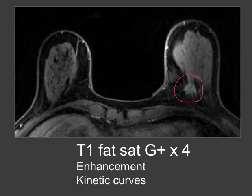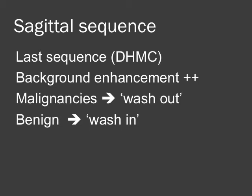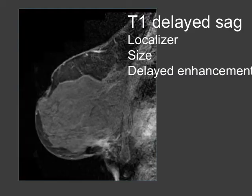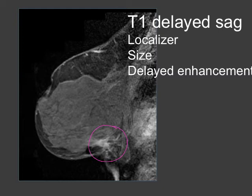Just notice here in this patient — you can see an enhancing spiculated mass in the deep posterior tissue of the left breast. The last sequence we obtain is the sagittal sequence. By this time there is often significant background enhancement, and malignancies in which the contrast tends to wash out on later studies may not be very apparent. Conversely, benign processes with progressive enhancement may become more apparent. Here is the sagittal sequence in this patient, showing that spiculated mass in the inferior aspect of her left breast. The T1 sagittal delayed image is very helpful for localizing lesions, giving another dimension to size estimation, and showing areas of delayed enhancement.